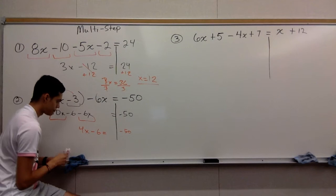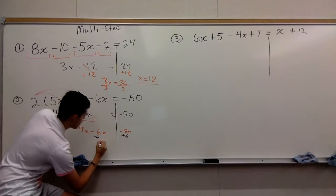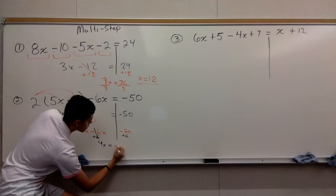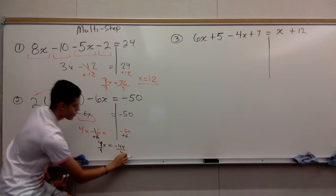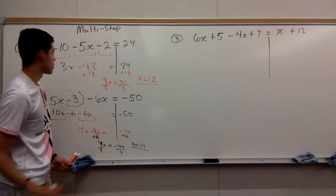Now you add 6 to the other side. Add 6, this disappears. You have 4x equals negative 44. Now do the opposite of multiplication - divide by 4 on both sides. Negative 44 divided by 4 gives you x equals negative 11. That's your answer for number two.